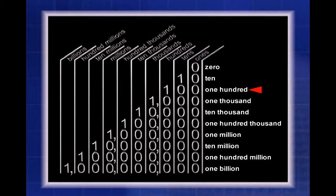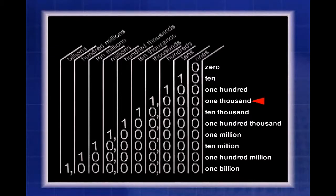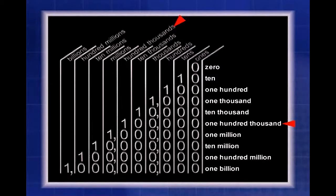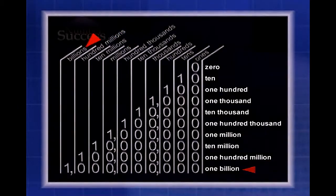One hundred has three places: one zero goes into the ones column, a zero goes into the tens column, and the one gets placed in the hundreds column. We can continue this pattern — one thousand has the one in the thousands column, ten thousand has a one in the ten thousands column, one hundred thousand has the one in the hundred thousands column, continuing for the millions, ten millions, hundred millions, up to one billion.